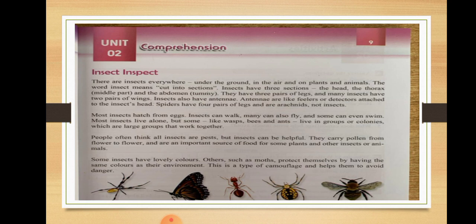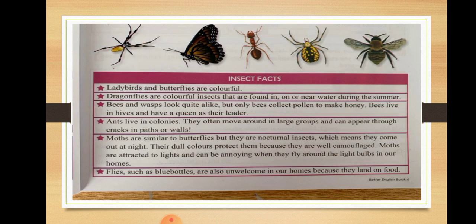Some insects have lovely, bright colors. But some insects have dull colors, such as moths — they protect themselves by having the same color as their environment. This is a type of camouflage and helps them avoid danger. Moths have the ability to adopt the color of the environment to protect themselves. Camouflage means disguised by coloring — the ability to change color and blend into the environment to avoid danger.